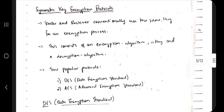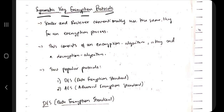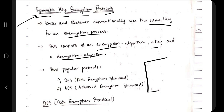Symmetric key encryption protocols use the same key for both the sender and receiver for the encryption process — that's why it's called symmetric. This consists of an encryption algorithm, a key, and a decryption algorithm. Two types are used: DES (Data Encryption Standard) and AES (Advanced Encryption Standard).